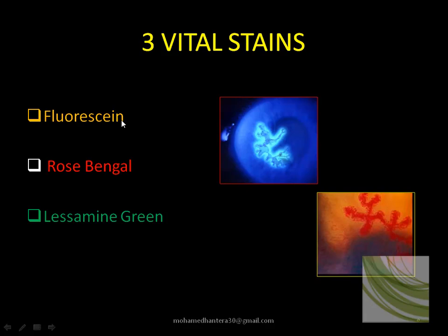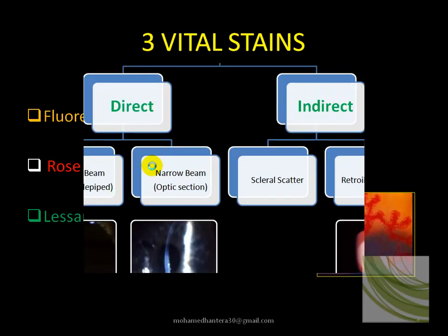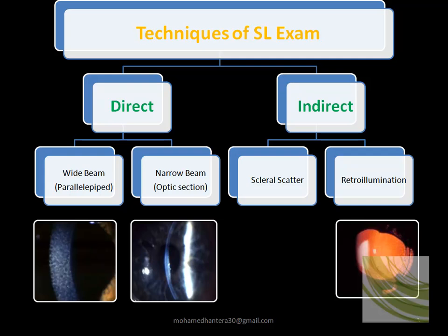Fluorescein has large molecules and doesn't penetrate the epithelium. So if you apply cobalt blue and find fluorescein staining, this means the fluorescein is staining the stroma, because it doesn't stain the epithelium. Both rose bengal and lissamine green stain necrotic cells or mucus. We can use a combination of fluorescein and rose bengal in herpetic dendritic ulcers — fluorescein stains the floor and rose bengal stains the edges.